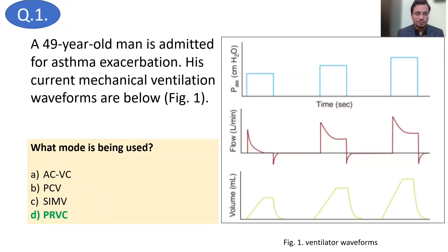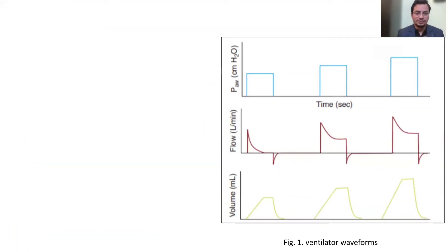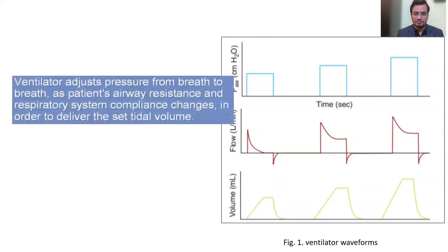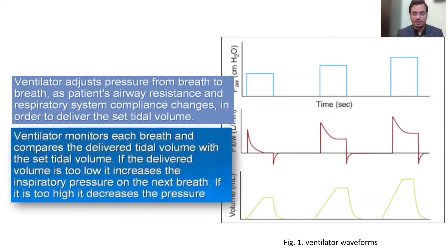We will understand more on PRVC in subsequent slides. This mode ensures that the volume target is met. It starts from the lowest pressure breath and the ventilator sees how much volume is generated. If the volume generated does not meet the set tidal volume, it delivers the next breath at higher pressure. In this way, it decides the lowest pressure needed to deliver the required tidal volume — it takes some test breaths to establish this.